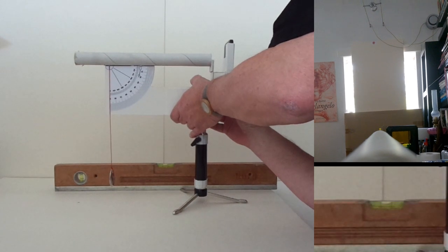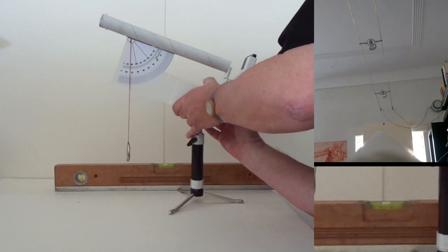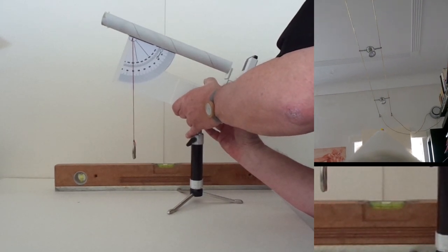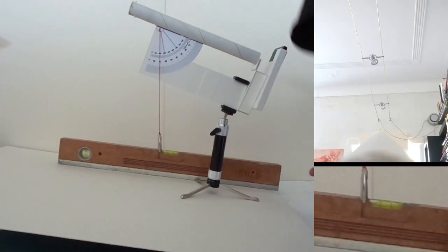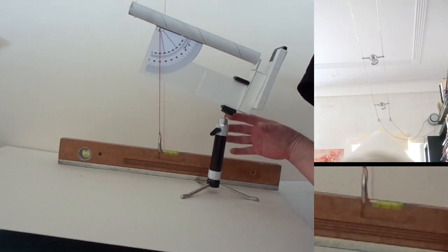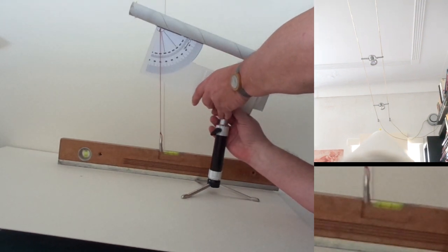The nice thing about it is that the zenith angle is measured from the vertical, in this case a small plumb bob. No matter what direction of the surface you are standing on, be it a slope or a curved surface, the reading to the star always stays the same.